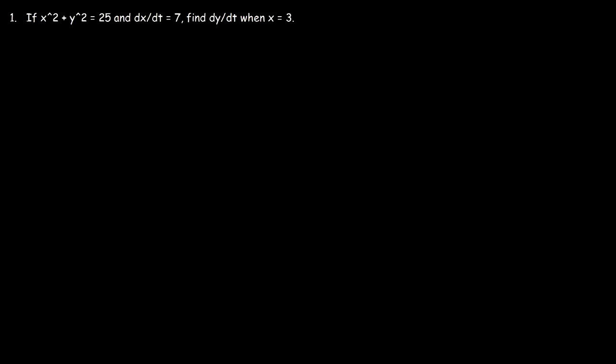Now, let's focus on this problem. If x squared plus y squared equals 25, and dx over dt is 7, find dy dt when x is 3. Now, it's always good to make a list of what you have and what you need to find. So we know the value of x, x is 3, but we don't know the value of y.